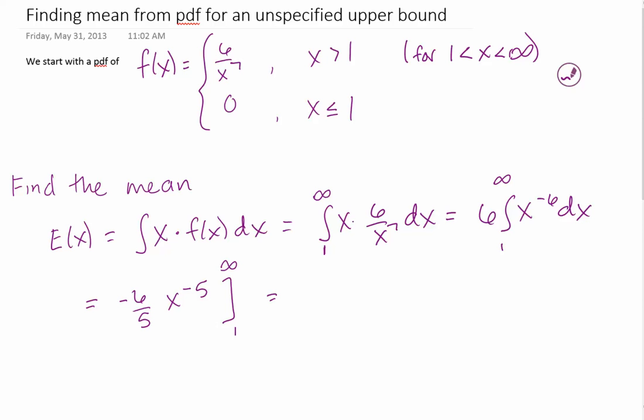And so we have to take the limit when we try and plug in the infinity. But essentially we're going to get that this is negative 6 fifths times 1 over, well let's just plug it in now. So this is infinity to the 5th power minus the negative 6 fifths times 1 over 1 to the negative 5th power.